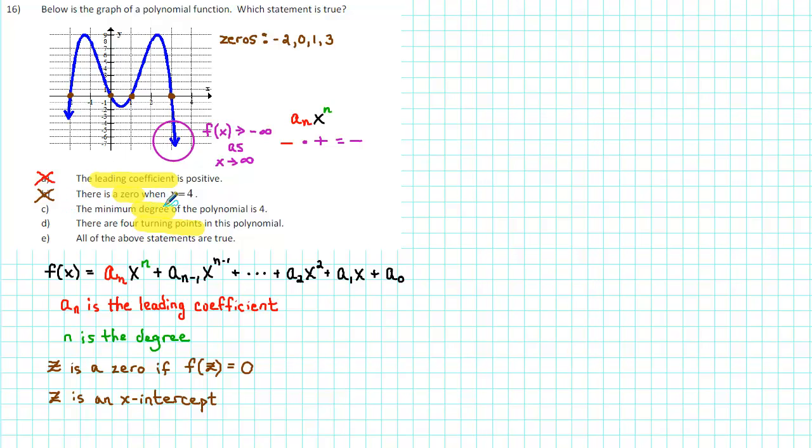For part C, we've already identified that the degree is n. But to determine the minimum degree, we need to look at the number of turning points. And turning points is the key term in part D. So let's do part D, and then we'll come back to part C.